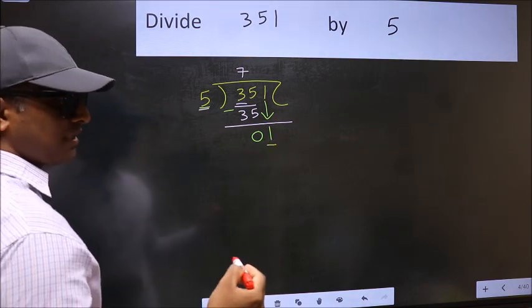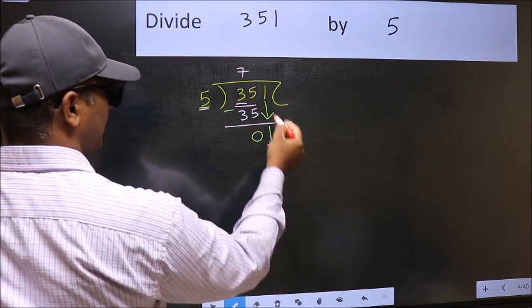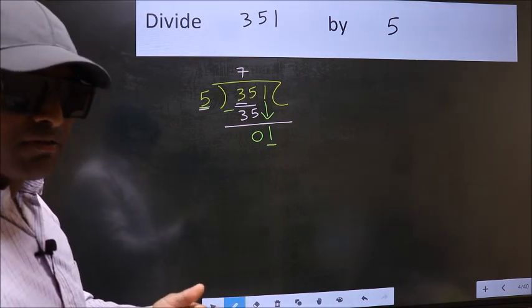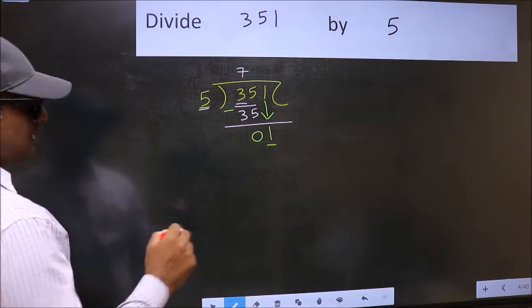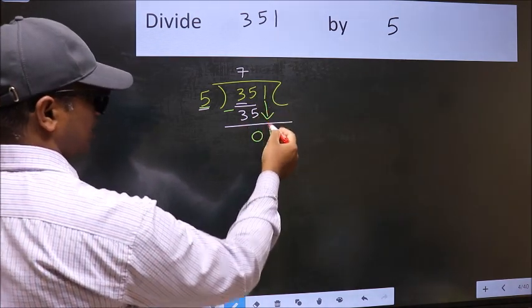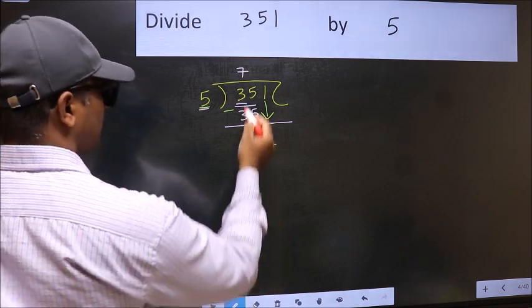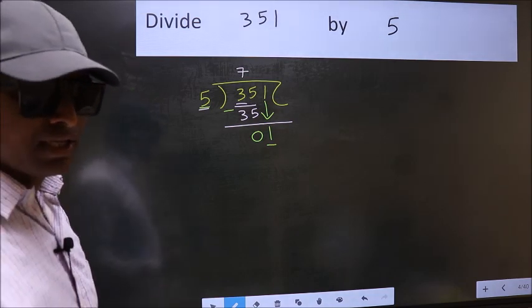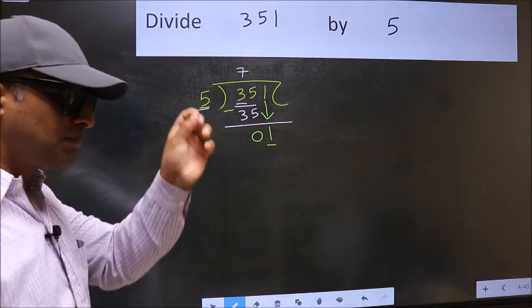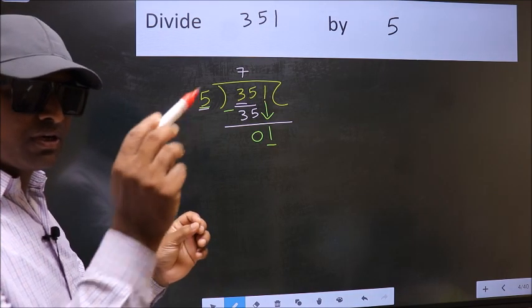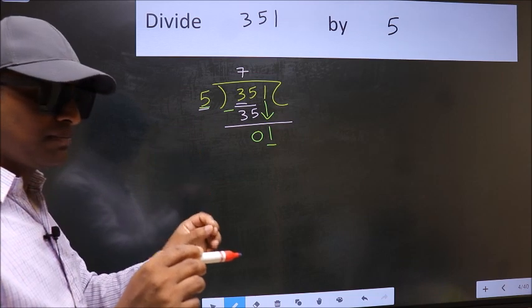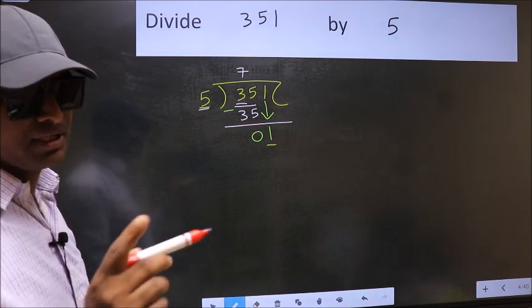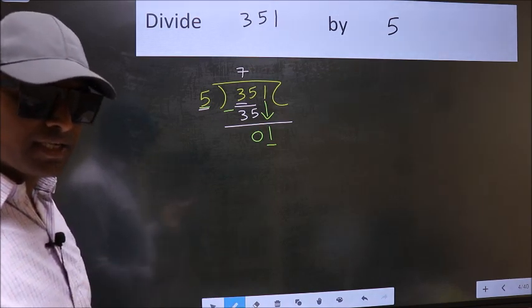So what many do is they directly put dot and take 0, which is wrong. Why is it wrong? Because just now you brought this number down, and in the same step you want to put dot and take 0, which is wrong. Bringing the number down and putting dot and taking 0 at the same step, you are not supposed to do.